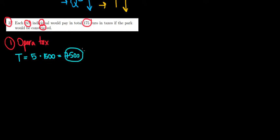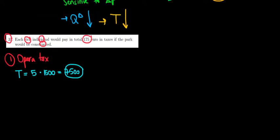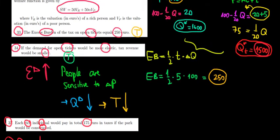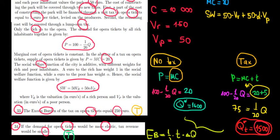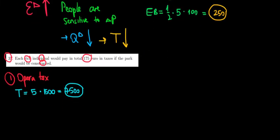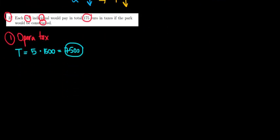Now the question is how much is left for the lump sum tax? Well for the lump sum tax we first must know how much money we have to raise and we have to raise the cost of 10,000 euros to build the park. So for 10,000 euros we already raised 7500 through the opera tax, meaning that we are left with 2500 euros to get to our 10k, so that 2500 euros are gonna be funded through a lump sum tax.